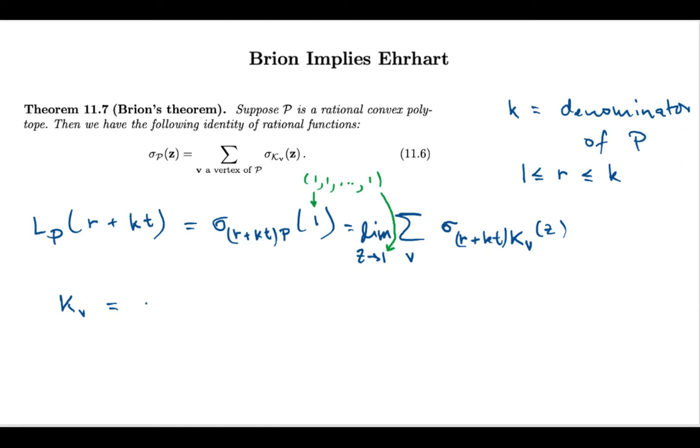So, let me say my vertex cone, of course, has apex v. And then, it has some generators. Let's say we have generators w1 through wm. And my notation here just means that we consider all linear combinations with non-negative coefficients. So, we start at v and then have some coefficient in front of w1, some non-negative coefficient in front of w2, and so on.